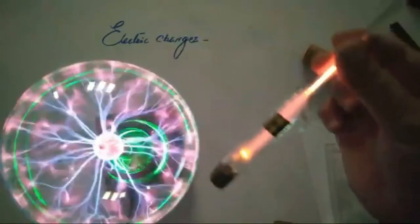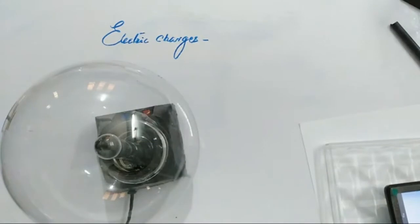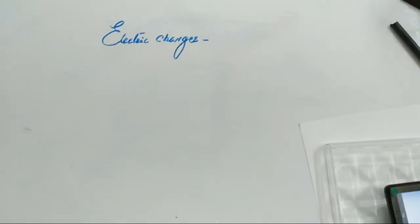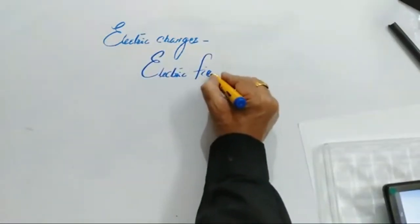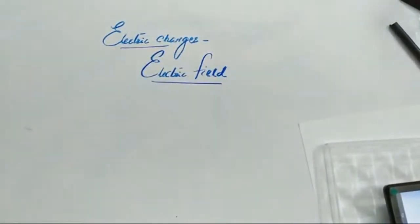So our topic is electric charges and electric field. To define charge: charge is defined as an inherent property of an object by virtue of which the electric field or electrostatic force of attraction or repulsion is caused. We will talk about charges first and later about electric field.